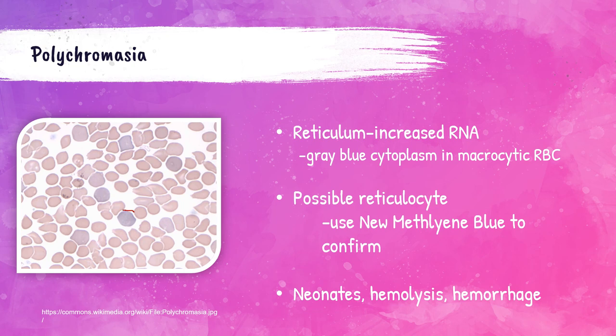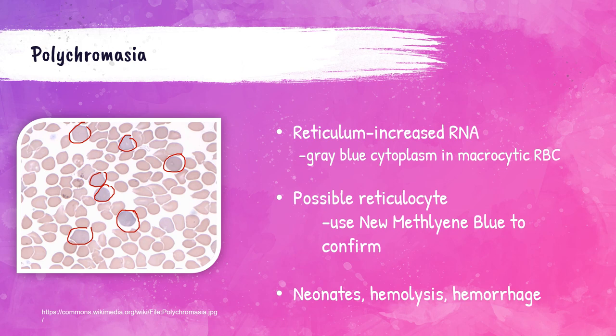When you see these in a smear with a Wright-Giemsa stain, they appear with a bluish tint and are referred to as polychromasia. This is a Wright-Giemsa stained peripheral blood smear — these polychromatic cells are also slightly larger than normal red blood cells, which makes sense because baby red blood cells are larger and get smaller and smaller until they're mature. To confirm that these are in fact immature red blood cells, a peripheral blood smear can be stained with a new methylene blue stain, where these polychromatic cells are referred to as reticulocytes or retics, and a percentage of reticulocytes can be counted using this stain.